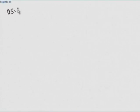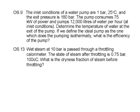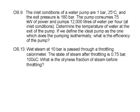OS 9: a water pump with inlet at 1 bar 25°C, exit pressure at 180 bar, power consumption of 75 kW, and volume flow rate of 12,000 liters per hour. The mass flow rate is determined by finding the density at 1 bar 25°C and multiplying by the volume flow rate.